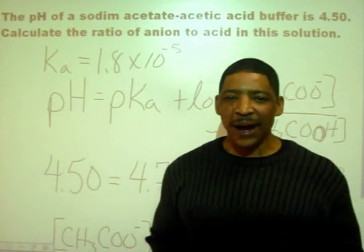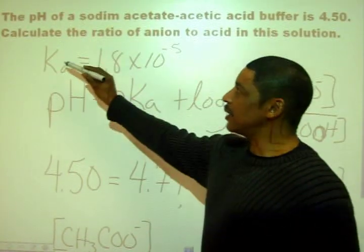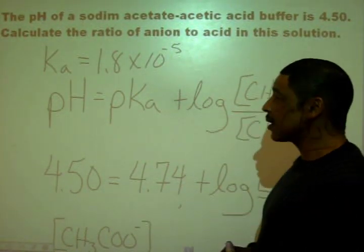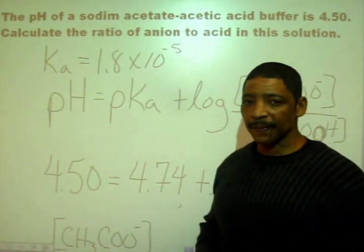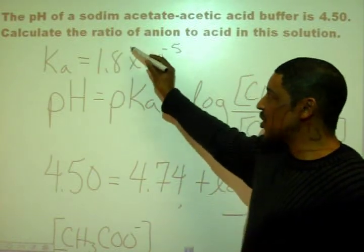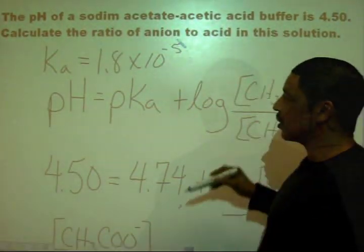Let's try one more practice problem. The pH of a sodium acetate acetic acid buffer is 4.50. Calculate the ratio of anion to acid in this solution.